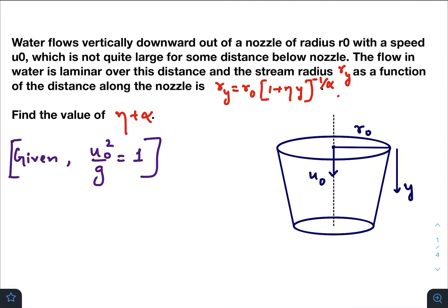Hey, what's up everyone. I hope all of you are doing great, and in today's question we have water flows vertically downward out of a nozzle of radius r0 with the speed u0, which is not quite large for some distance below the nozzle.